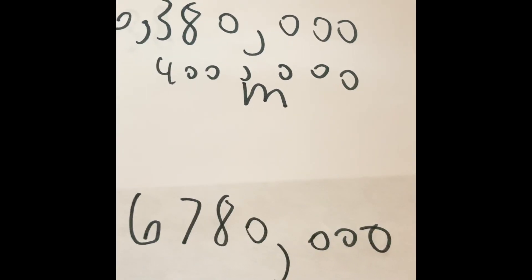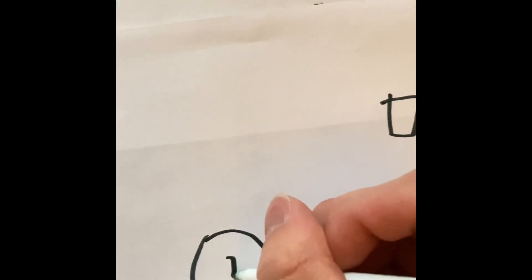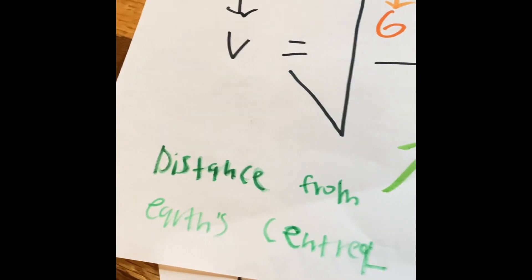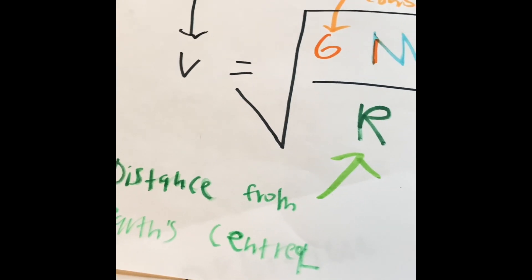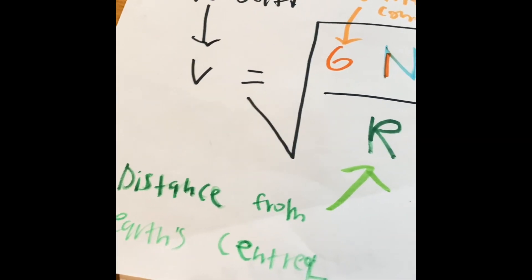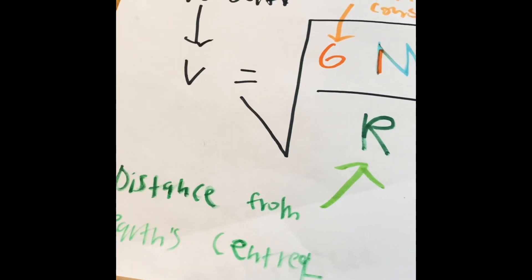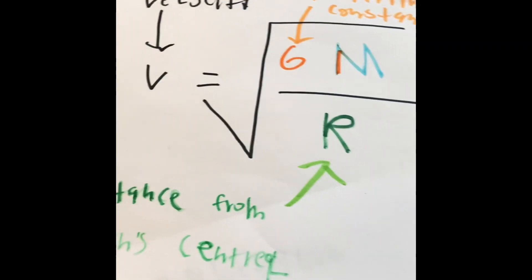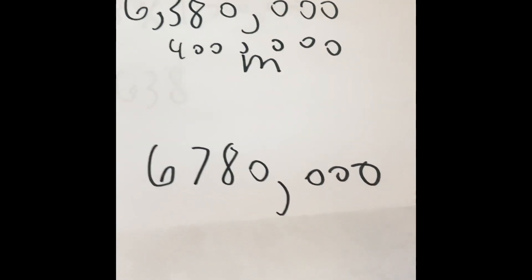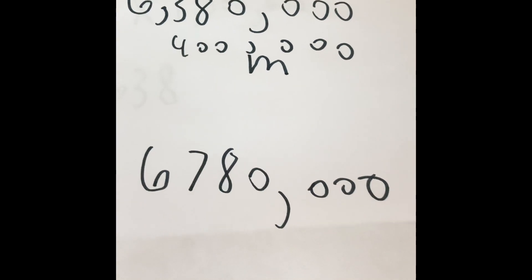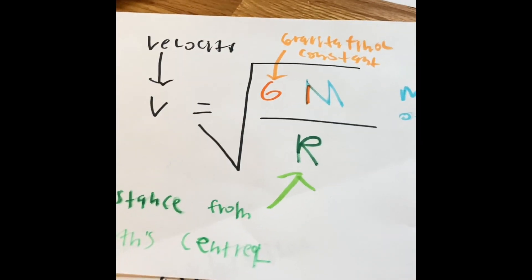Wow — 6,780,000 meters. That is the distance between the space station and all the way to the center of Earth's core. That's why we use R as the distance from Earth's center. We calculated the distance from the station to the surface, and the surface to Earth's center, added the two, and got our total distance of 6,780,000 meters apart. Now we have every piece of information we need. Let's insert those values into the formula.